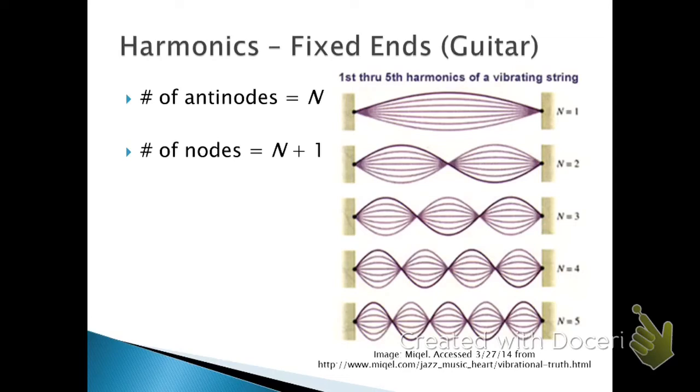Now depending on whether the ends are fixed or not, you get different patterns of standing waves. So again, on every single fixed end, you get a node. On every single open end, you get an antinode.